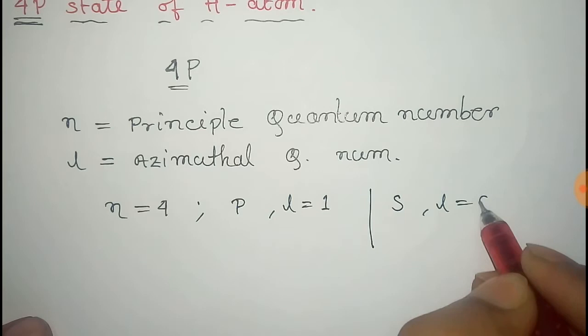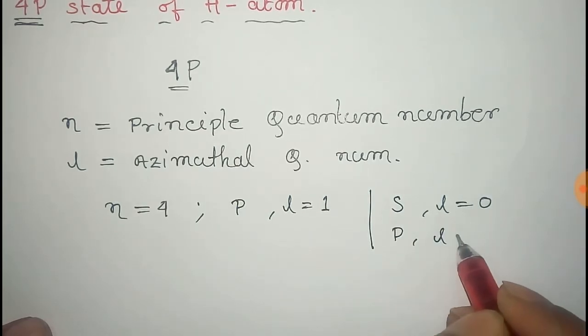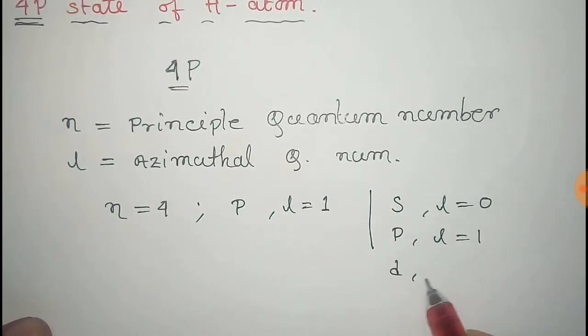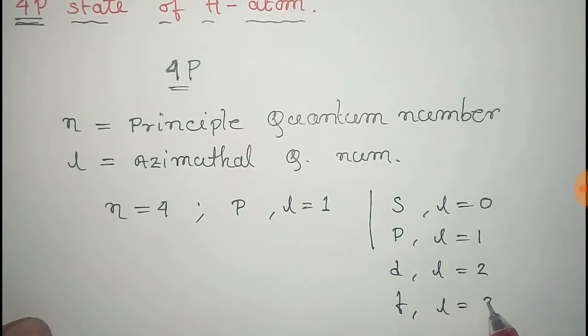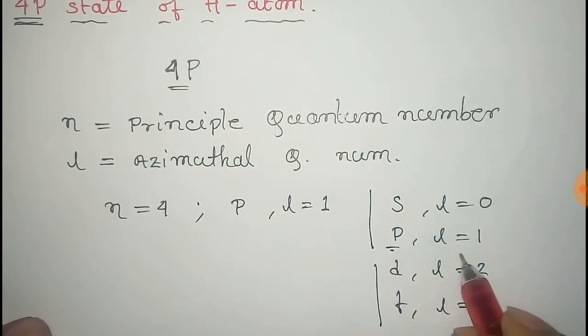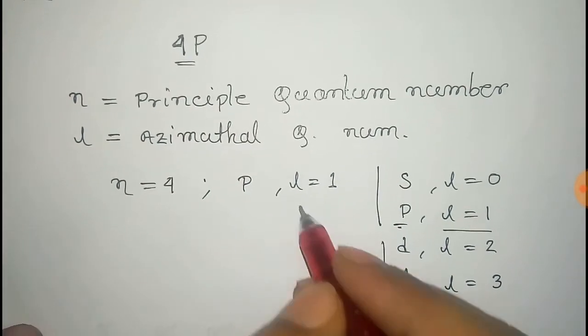Because we know that for s orbital L equals 0, for P L equals 1, for D L equals 2, and for F L equals 3. So for P orbital, L equals 1.